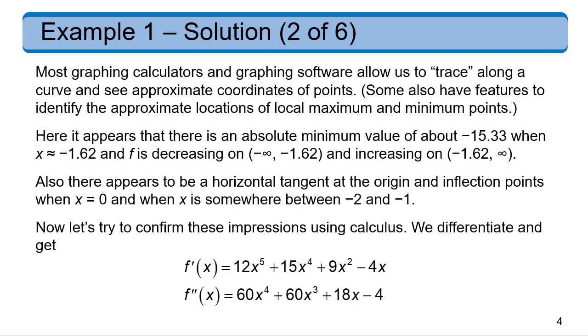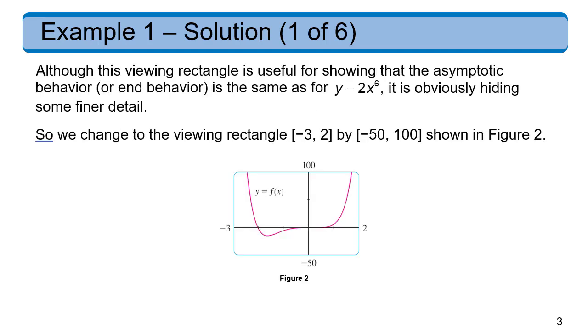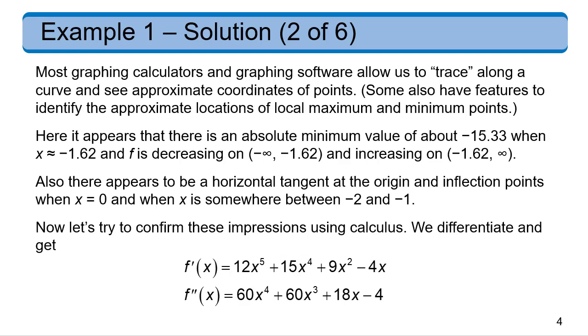Now, most graphing software, including graphing calculators, have some sort of trace function that let you move a little dot around on the function and it'll display what the x and y values are. And by doing that on this previous example, we can figure out that we seem to have an absolute minimum right at the bottom of that little trough, right around negative 15 and a third.